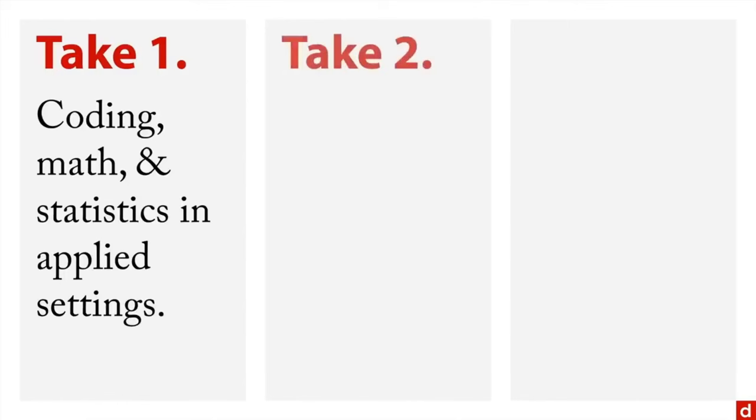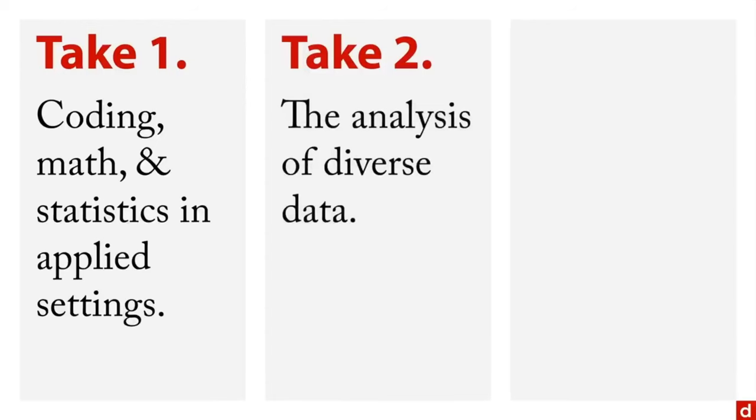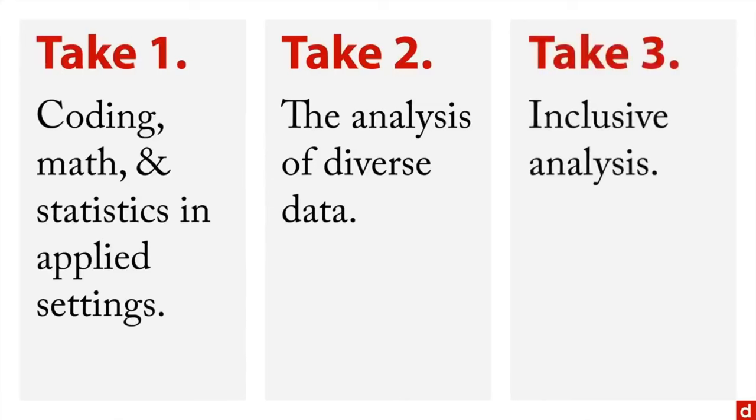Data science can be defined in a few ways. Take one: data science is coding, math and statistics in applied settings. Take two: data science is the analysis of diverse data, or data that you didn't think would fit into standard analytic approaches. A third way is that data science is inclusive analysis, to get the most insightful and compelling answer to your research questions.